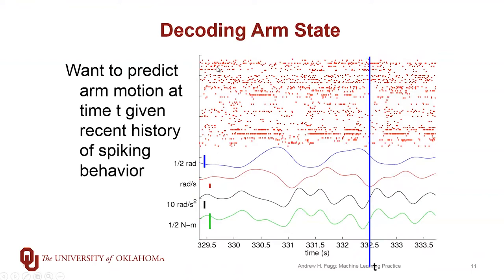The problem setup looks like this. At some point in time t, we want to make a prediction about arm motion. This blue line here corresponds to the orientation of the shoulder joint. Red is velocity, black is acceleration, and green is the torque that's being generated in order to move that joint.